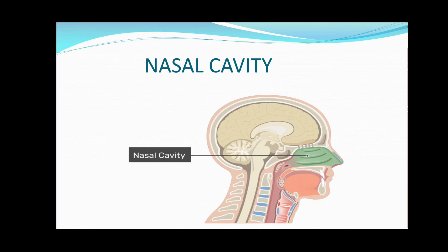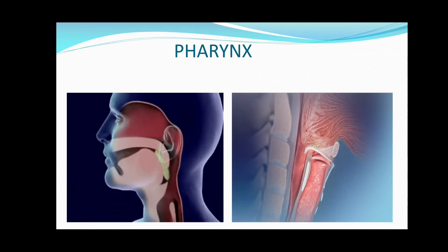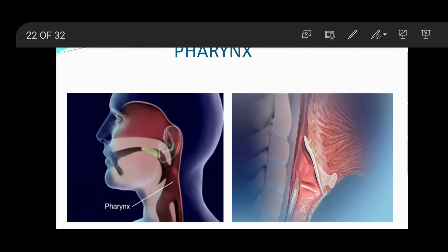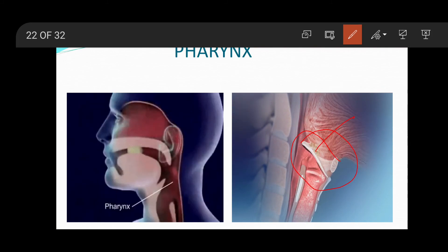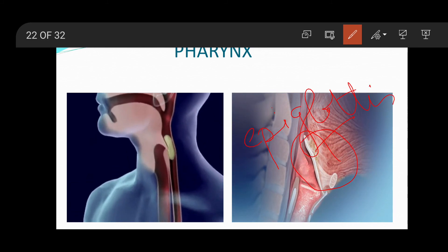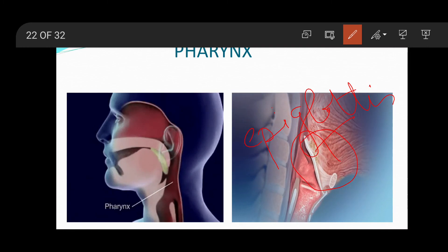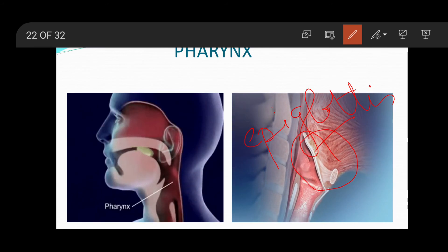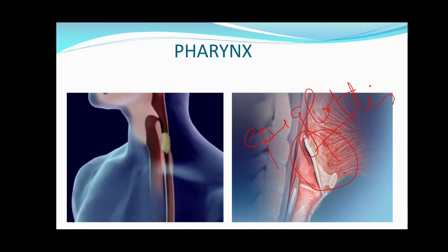Then the air passes into the organ which is called the pharynx. From pharynx, air passes into a chamber that is called the larynx or the voice box. The opening of pharynx into the larynx is guarded by a valve known as the epiglottis. This valve closes the opening when we take in food and keeps it open during breathing. That's how the epiglottis works.